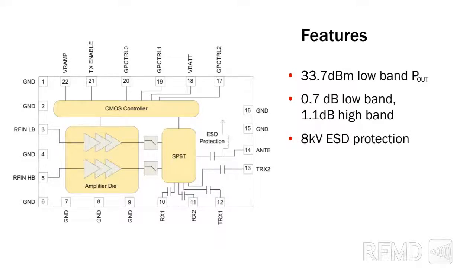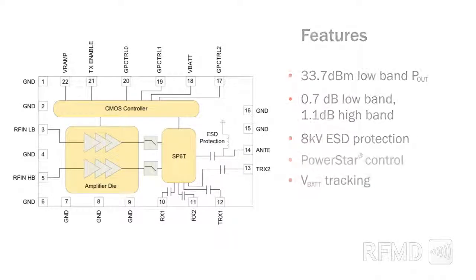Additional features include robust 8 kilovolt electrostatic discharge protection at the antenna port, power star control including power flattening for low power and current variation into VSWR, and battery voltage tracking for improved switching performance at low battery voltage.